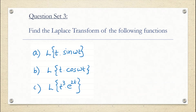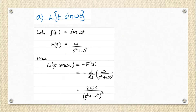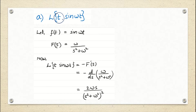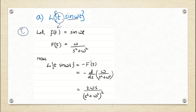Question set 3 starts with the first question: Laplace transform of t·sin(ωt). As per the formula, if we set aside the multiplying factor t, whatever remains is our f(t). So f(t) is sin(ωt). The first step is to just identify f(t), which in this case is sin(ωt) — ω is a constant.